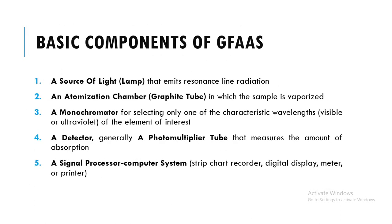The basic components of GFAS include: a source of light, or lamp, that emits resonance line radiation; an atomization chamber, specifically a graphite tube, in which the sample is vaporized; a monochromator for selecting only one of the characteristic wavelengths, visible or ultraviolet, of the element of interest; and a detector, generally a photomultiplier tube, that measures the amount of absorption.